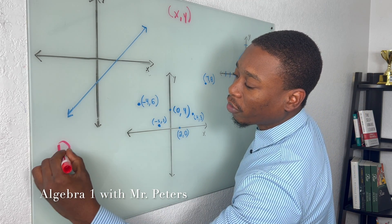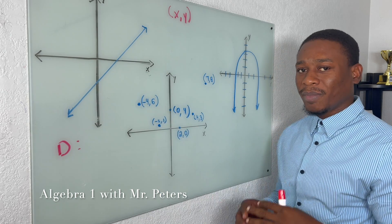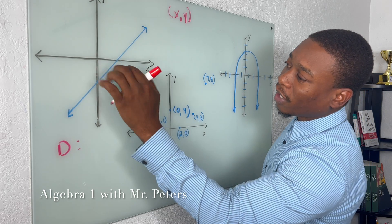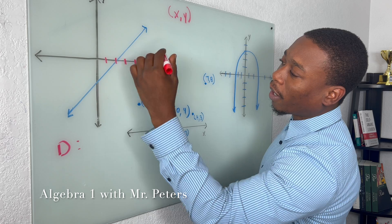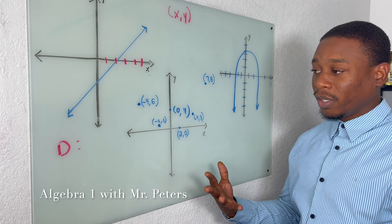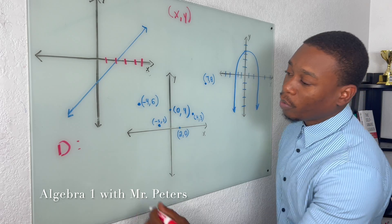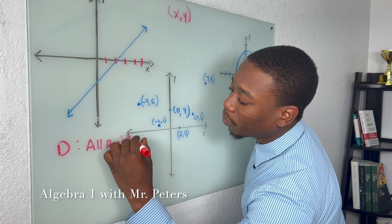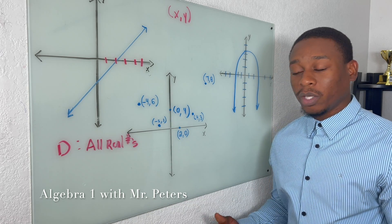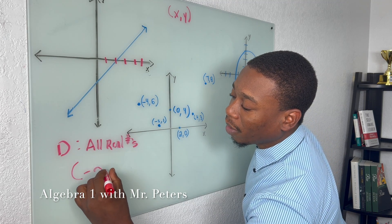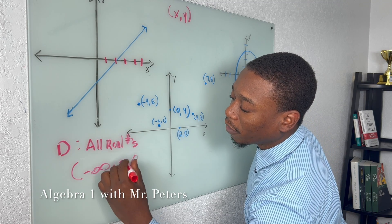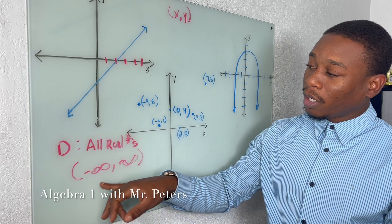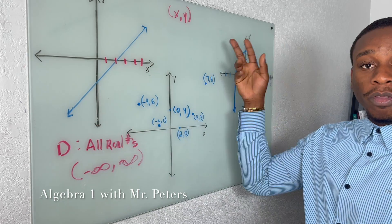So when I look at my first graph right here, when we have arrows, that means that this line — this graph is going to continue going. So essentially all these X's — 1, 2, 3, 4, 5, and so on — are going to be included. So the way we can represent this is all real numbers, meaning that any number on that X axis is going to be included. Another way we can write this is negative infinity to positive infinity, because we cannot list all those numbers. So we substitute negative infinity for all the negative numbers, positive infinity for all the positive.